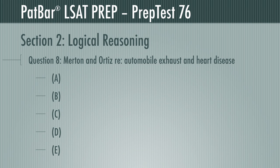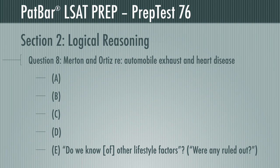Question 8 presents Merton arguing that the higher rate of heart disease in a study of people living on busy streets must therefore be caused by automobile exhaust. Ortiz argues: do we know for sure that it is not something else? This one is straightforward. If we rephrase Ortiz's question — do we know about other lifestyle factors — it means the same as: did we rule out any other lifestyle factors? None of the other answers makes sense. Ortiz doesn't question the study itself, or bring up other effects of air pollution, or offer an alternative explanation. E is the correct response.